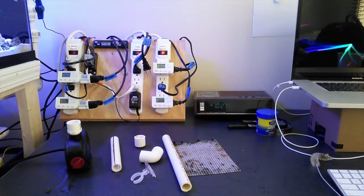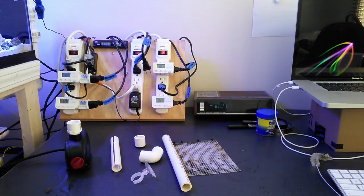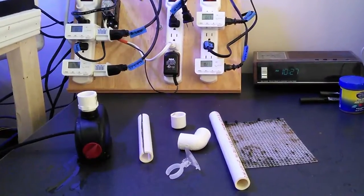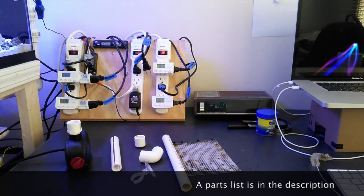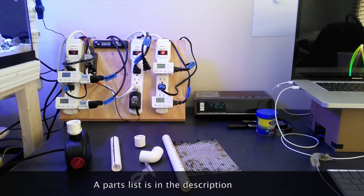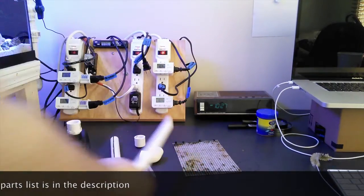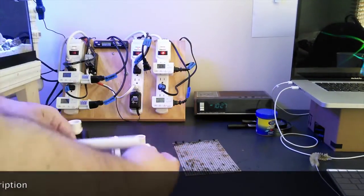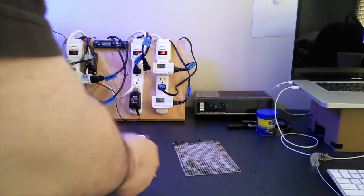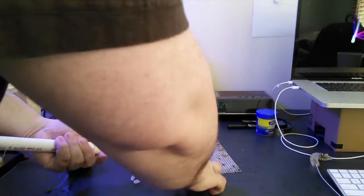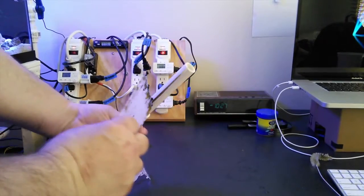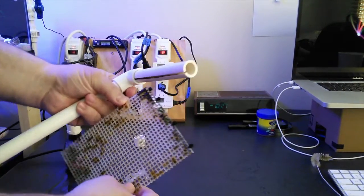The parts needed are a small power head with suction cups at the base, about two feet of half-inch PVC pipe, and you'll need the following half-inch PVC pipe fittings: a 90 degree elbow, an end cap, and an adapter to connect the power head outlet to the half-inch PVC pipe. I used a half-inch female thread to a half-inch slip fitting, but you may need something different depending on your power head.